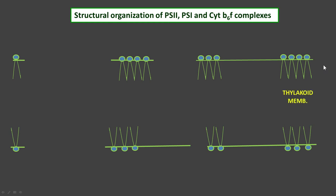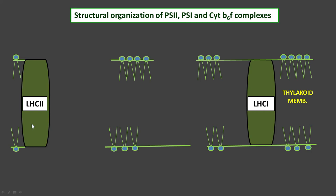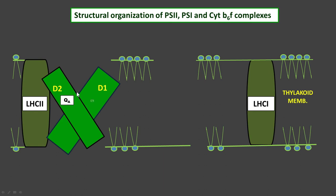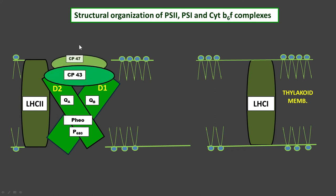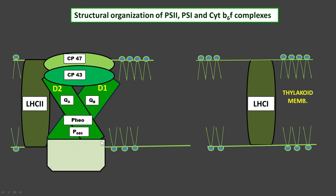Now let's see how these thylakoid complexes are organized in the thylakoid membrane. The light harvesting complexes LHC2 and LHC1 are associated with their respective photosystems. In Photosystem 2, we have D1 and D2 proteins with QA and QB sites, reaction center P680, pheophytin as the primary electron acceptor, CP43 and CP47 as antenna molecules, and the oxygen evolving complex on the D1 protein at the luminal face — rich in manganese, iron, and chloride ions.